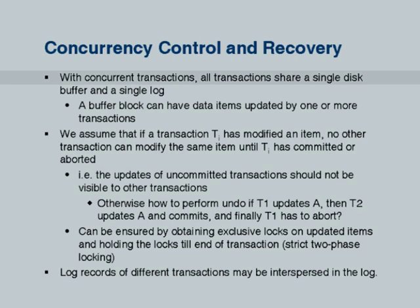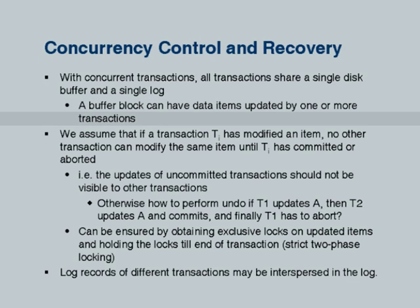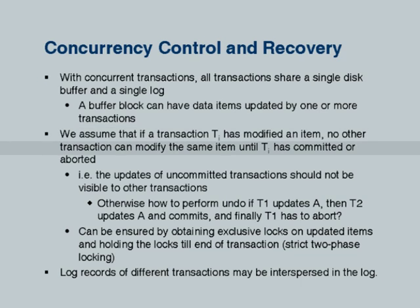With concurrent transactions, log records can be interspersed and a single buffer block can have data items updated by more than one transaction. To ensure recoverability, we assume that if a transaction TI has modified an item, no other transaction can modify the same item until TI has committed or aborted. Otherwise, rolling back TI would wipe out the other transaction's updates. To relax this, you need logical undo logging, which we will briefly mention later.